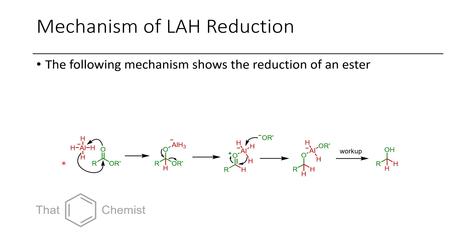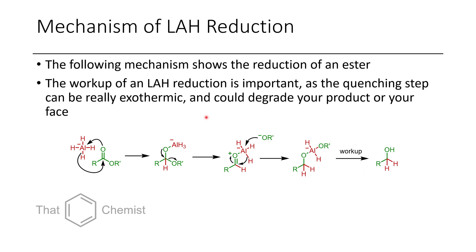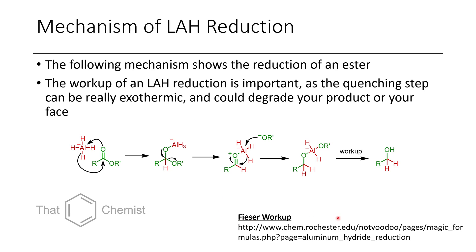Let's talk through the mechanism of the LAH-mediated reduction of esters. Similar to the borohydride case, the ester carbonyl coordinates to aluminum and liberates a hydride, which reduces the carbon. The alkoxide can then collapse and eliminate off an alkoxide as well. This alkoxide attacks the aluminum species, helping deliver another hydride. The aluminum alkoxide is then converted to the alcohol upon workup. For these workups, a good resource is Not Voodoo from the University of Rochester, which lists the procedure for a Pfizer workup — a common workup used in industry for LAH and DIBAL reductions.